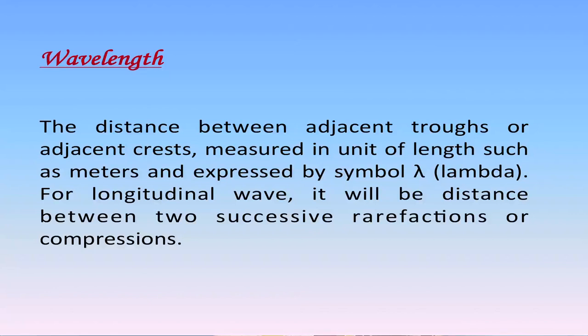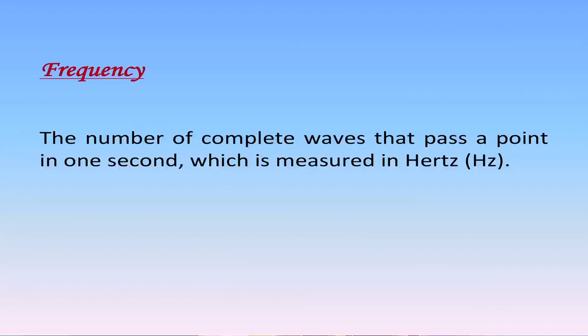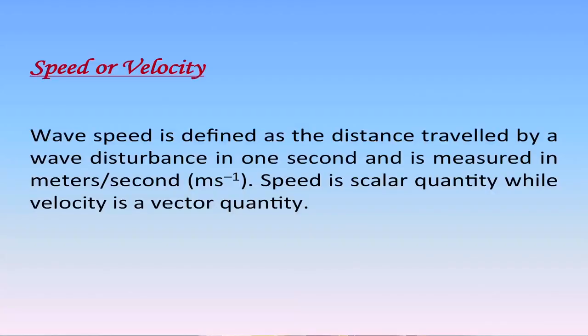For a longitudinal wave, wavelength is the distance between two successive rarefactions or compressions. Time period defines the time it takes for one complete wave to pass a given point and is measured in seconds. Frequency is the number of complete waves that pass a point in one second, measured in hertz. Wave speed is defined as the distance traveled by a wave disturbance in one second and is measured in meters per second. Speed is a scalar quantity while velocity is a vector quantity.